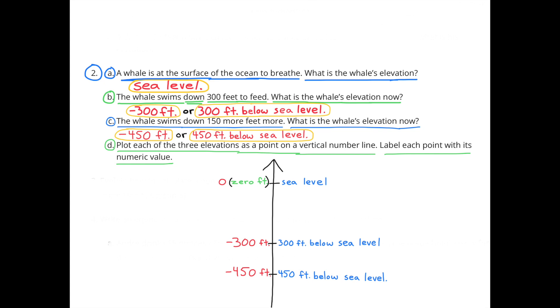C. The whale swims down 150 more feet. What is the whale's elevation now? If the whale started at 300 feet below sea level and then he swam down another 150 feet, that would be 450 feet below sea level or negative 450 feet.